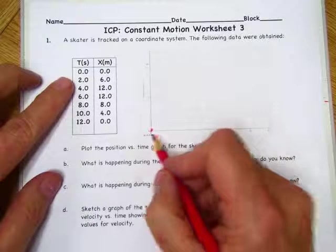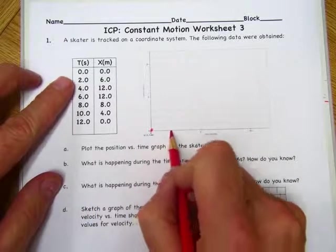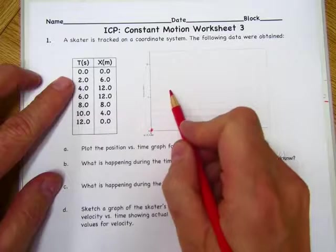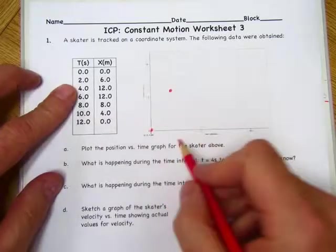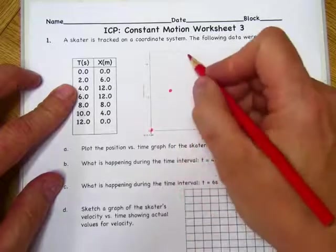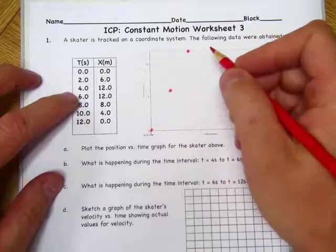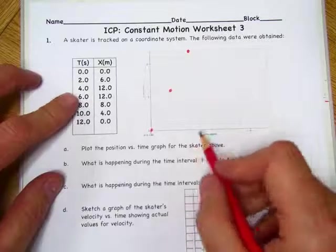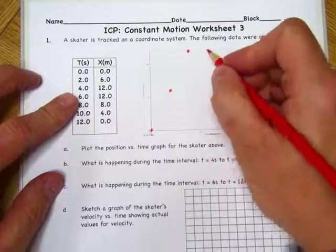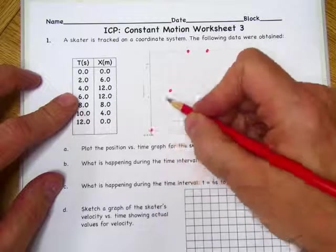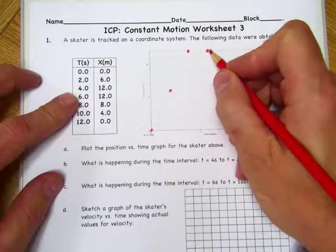At 2 seconds, the position was 6, so up here. At 4 seconds, the position was 12. At 6 seconds, the position was still 12, so we know that it was moving in a positive direction and stood still for a little while.